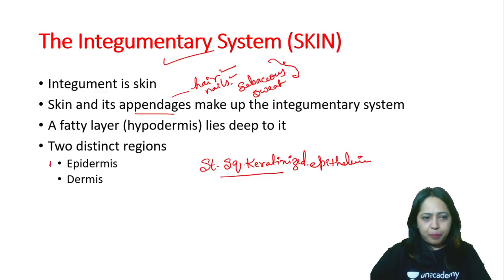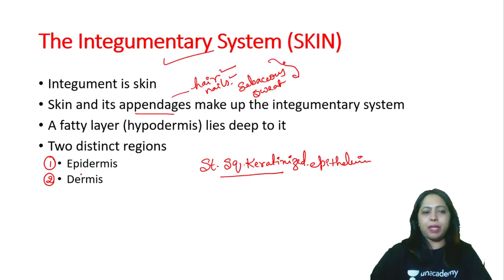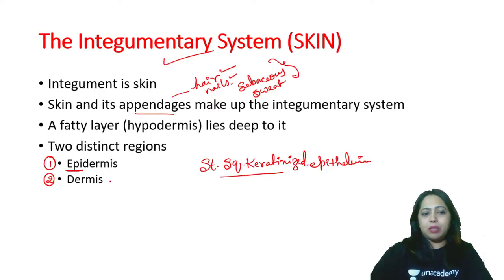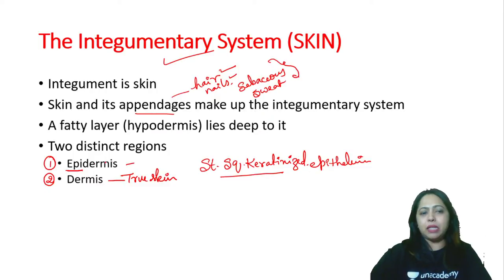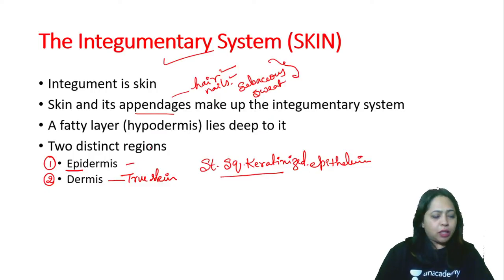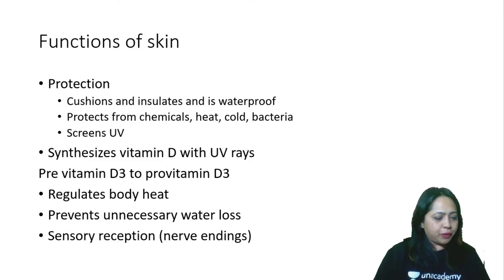Skin has two layers. There is the epidermis — that's the outer one — and the dermis, which is the inner one. 'Epi' — the name itself tells you it is the outer one. Dermis is also called the true skin. Epidermis is above the dermis.